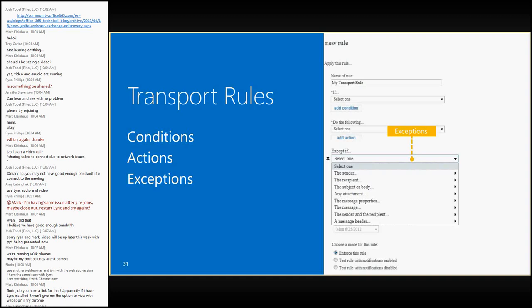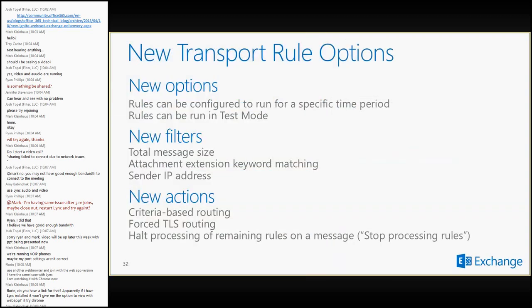At the bottom there's a 'choose a mode for this rule' option: enforce this rule. It used to just be on and off, but now we've added 'test rule with notifications' or 'test rule with notifications disabled'. You can actually test these rules and see if they're going to do exactly what you think they are before you turn them on and they affect everybody in the organization. New options also include: configuring rules to run for a specific period of time, test mode, filtering by message size (previously only attachment size was supported), looking at attachment extensions like .mp3 or .txt, and sender IP. Based on these new options, you get criteria-based routing and can ensure TLS is enabled for certain messages. There's also 'stop processing more rules' so if you hit a particular rule, no other rule applies.